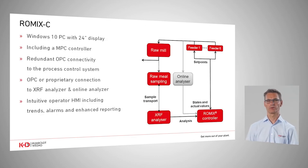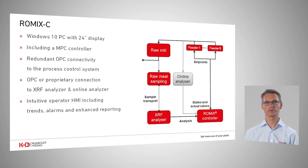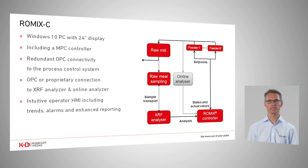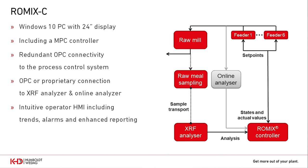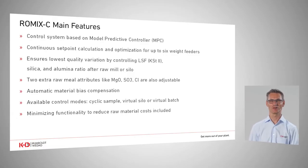Please have a look at the control diagram on the right. Let us start with raw mill sampling right after the raw mill. ROMIX-C collects the analyzer's values either from the lab or, if existing, from the online analyzer. Based on the results of the continuous analyzers, the MPC controller calculates and updates the raw mix set points. These are automatically forwarded to the various raw mill feeders. ROMIX-C can adjust up to 6-way feeders simultaneously. ROMIX-C runs under a typical Windows machine and offers the MPC controller, the OPC connectivity to the process control system, and the data connection to the sampler, to the lab or to the online analyzer.